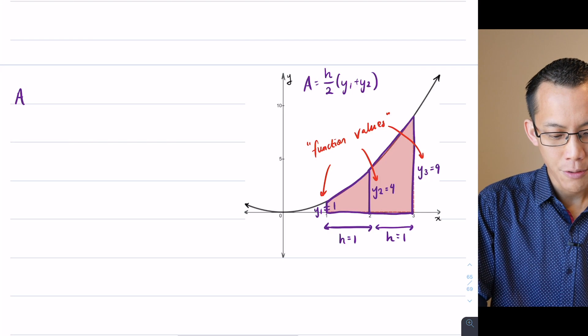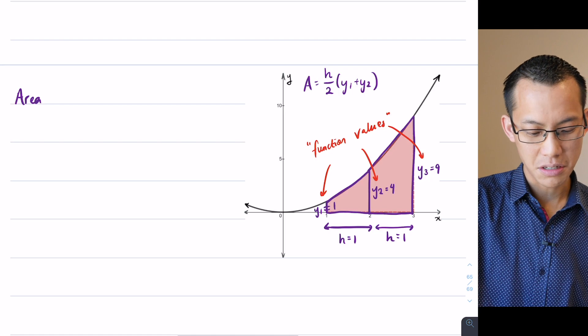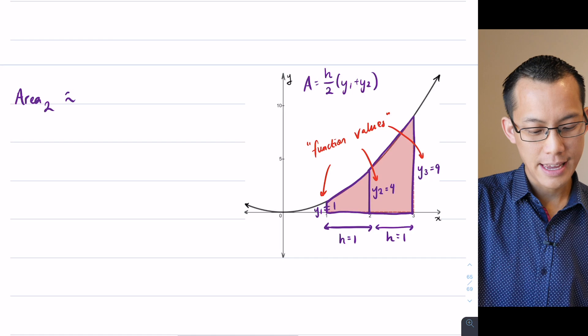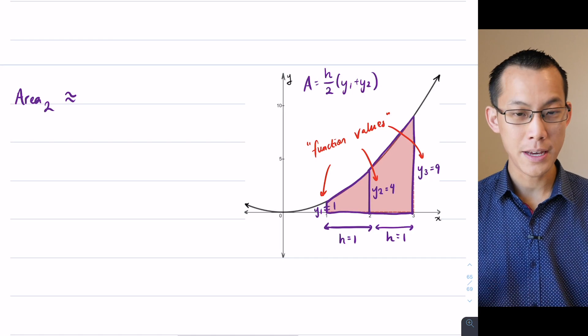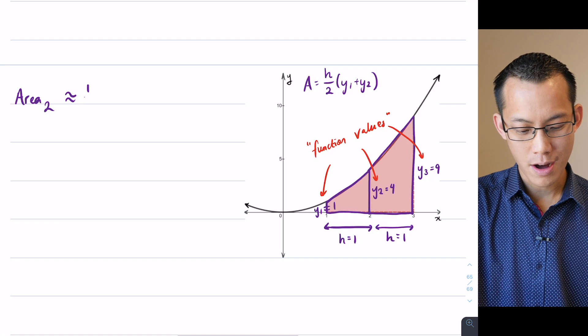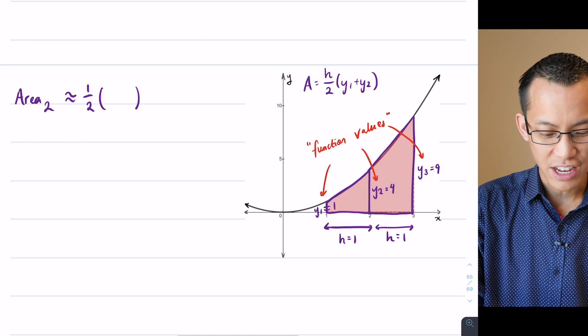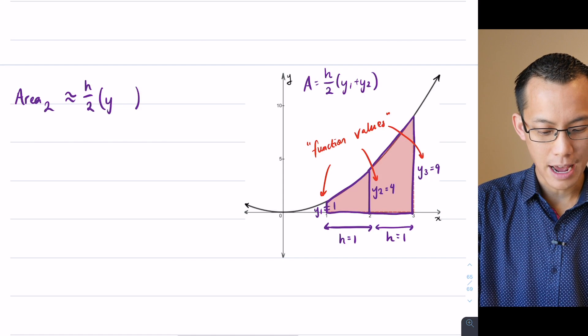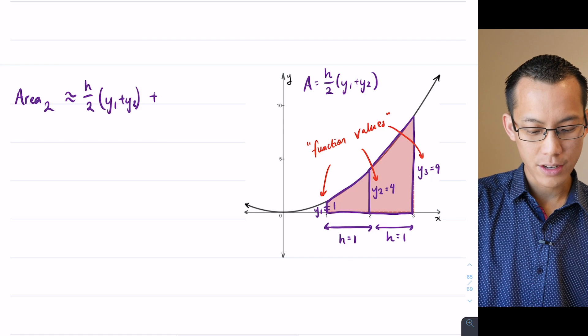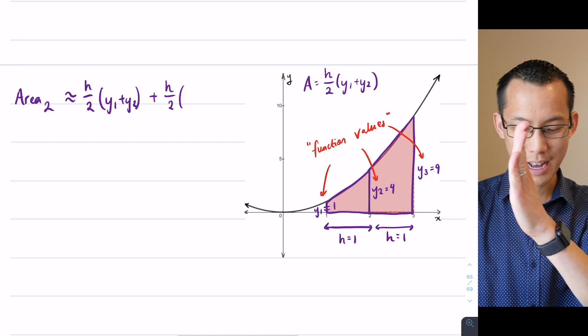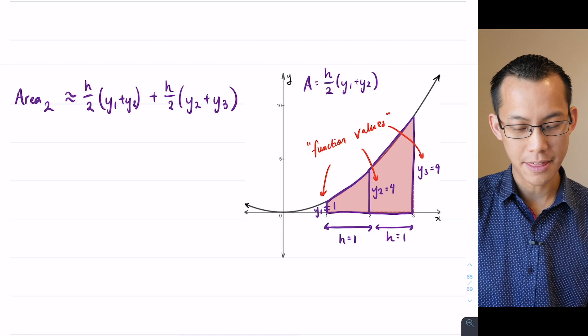I'm going to write, whoopsie daisy, area, and to distinguish it from the previous one, I'm just going to call this area 2, okay? Again, it's still approximate, but now I'm going to work out each of the two trapeziums, right? So it's h over 2, which is 1 over 2, and then I'm going to have, in fact, I'm going to write that as h over 2, just so that we can see the next line. I'm going to have y1 plus y2, that'll deal with the first trapezium, and then I deal with the second trapezium. Same height, but its parallel sides will not be y1 and y2, they'll be y2 and y3, okay?